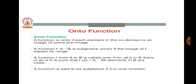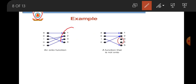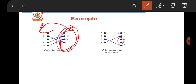Next is the onto function. A function is onto if each element in the co-domain is an image of some pre-image. It is also called a surjective function. For example, set A has elements {a, e, i, o, u} and set B has {1, 2, 3, 4}. Here a→1, e→2, i→2, o→3, u→3 — every element of B has a pre-image, so it is onto. In the second example, elements 3 and 4 have no pre-image, so that is not onto.